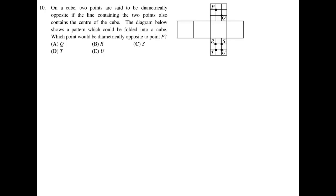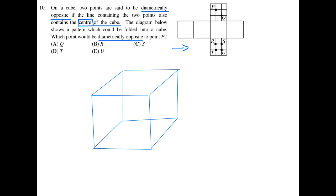Number 10, on a cube, two points are said to be diametrically opposite if the line containing the two points also contains the center of the cube. The diagram shows a pattern which could be folded into a cube. Which point would be diametrically opposite to P? First I'm going to draw this out.